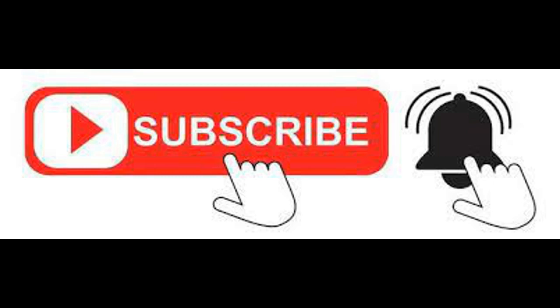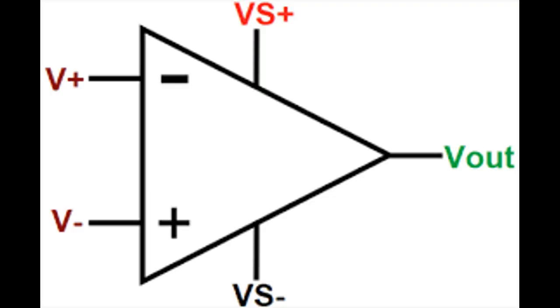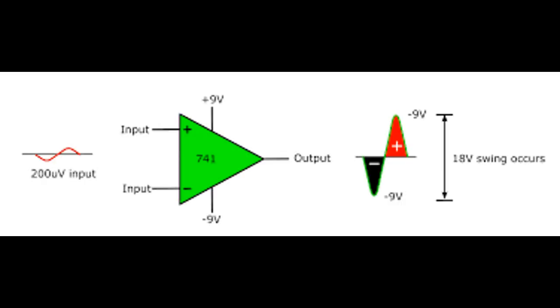Also hit the notification bell icon, otherwise you might miss some of my videos. So let's get started. An operational amplifier is a high gain DC voltage amplifier, meaning it can use a very small voltage difference between its inputs to control a much larger voltage at its output, typically hundreds of thousands of times larger. An op amp has two input terminals and one output terminal.